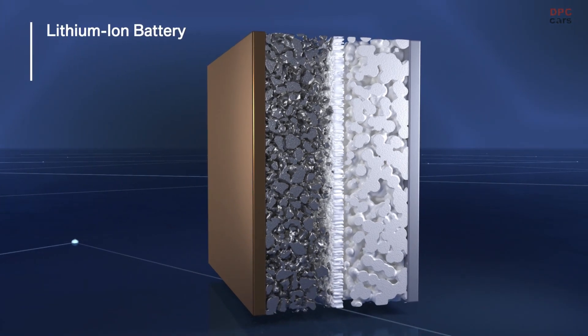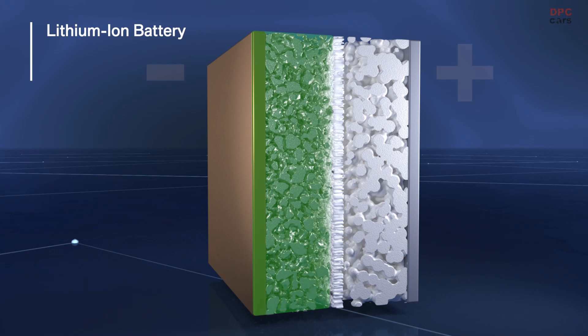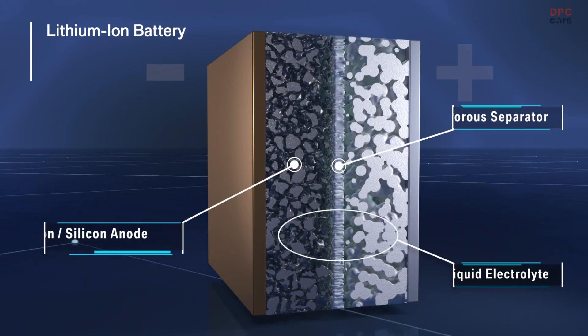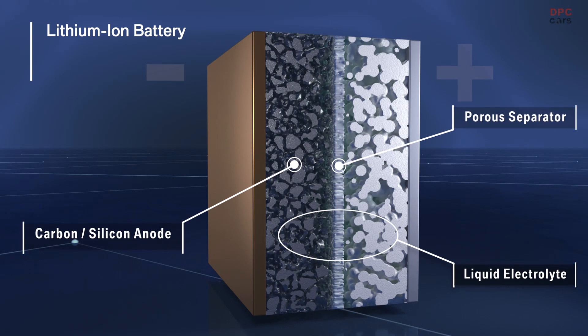Today's batteries are based on lithium-ion technology composed of two electrodes: cathode, anode, and a porous separator. A liquid electrolyte allows the lithium-ion transfer and thus the flow of current.